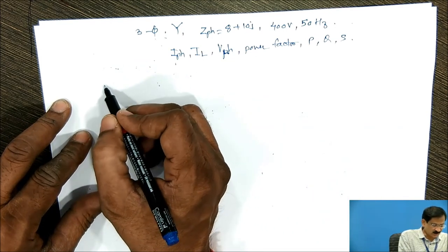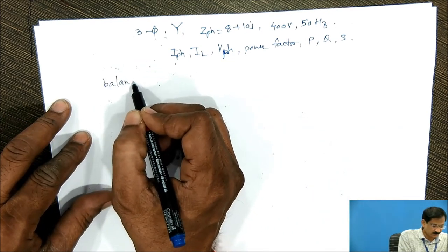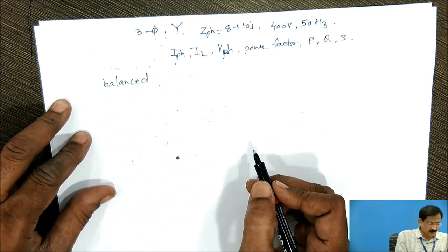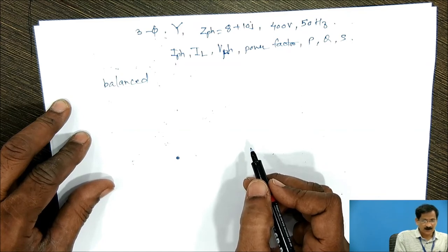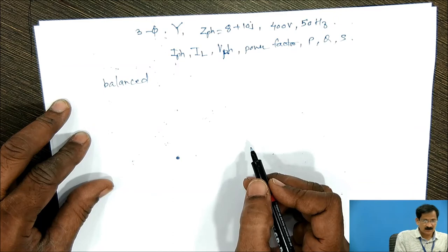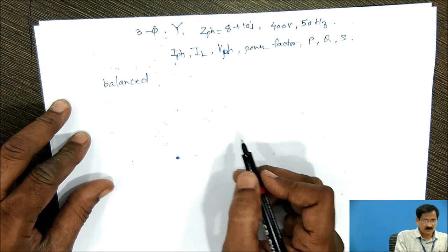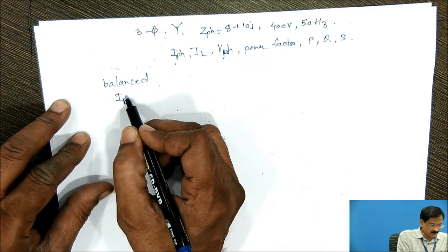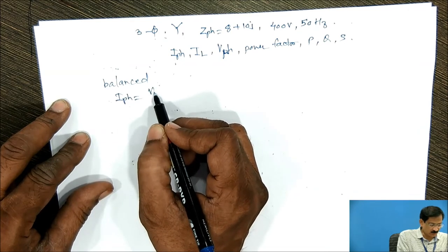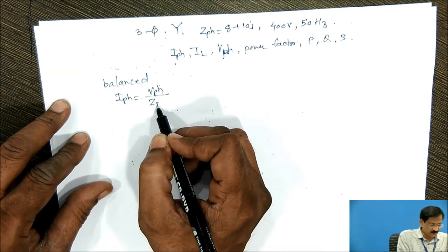Since the system is balanced, it means that all the impedances, three impedances are having same value and nature. Let us concentrate our numerical with respect to a single phase. So to find out Iph, it is required to know Vph and Zph.